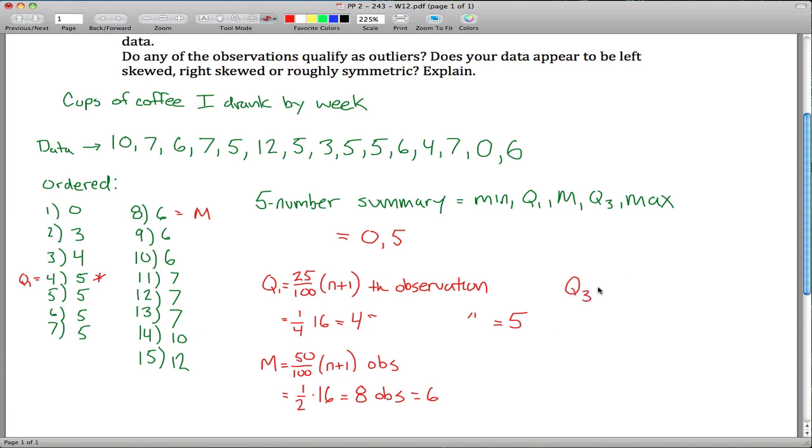And Q3, getting a little tired of this by now, but it's the same idea, except now it's the 75th percentile, so that's 3 quarters of 16, which is 12, so we want the 12th largest observation, and it looks like that's this guy right here, 7, so this right here is Q3. Back up to our 5 number summary here, median is 6, Q3 is 7, and the maximum, the largest observation is 12 right here. So that's good, we figured out our 5 number summary.